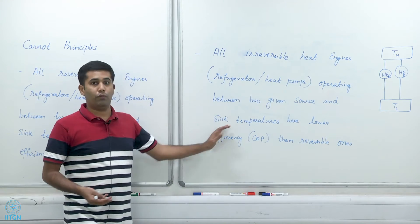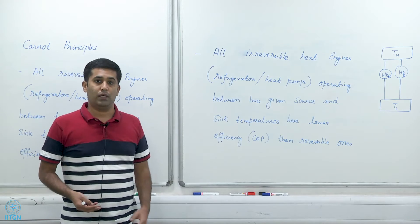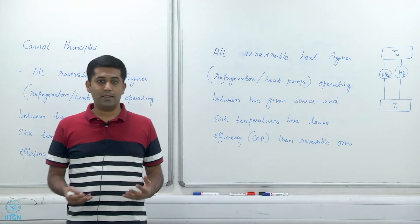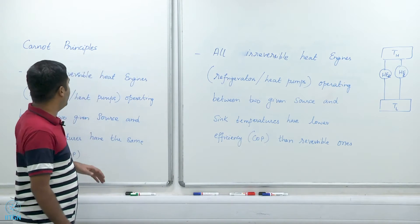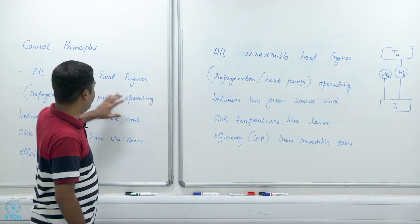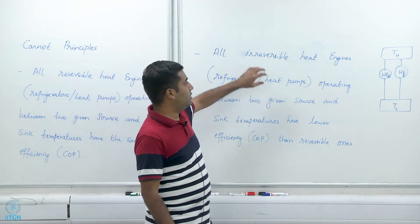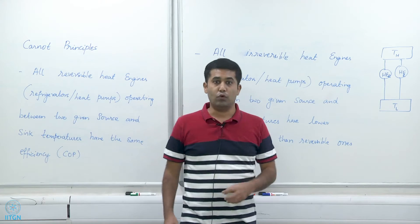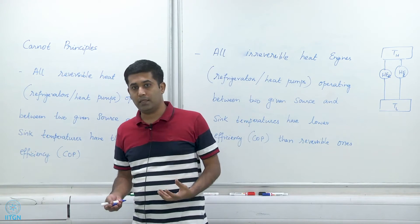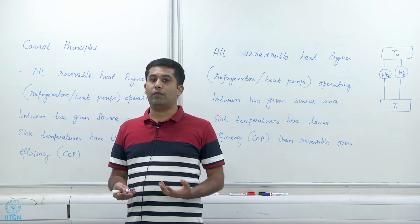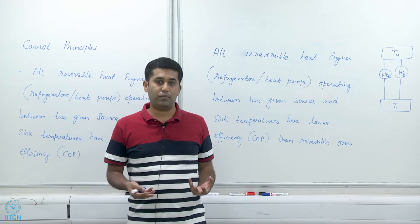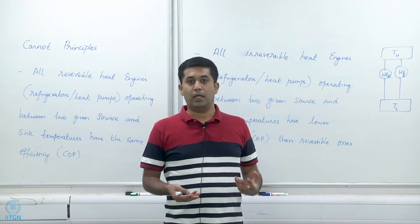These together form the Carnot principles. It is easy to show that if we violate this — for example, if we have an irreversible heat engine that is more efficient than a reversible heat engine — then we can show that we either violate the Kelvin-Planck statement or the Clausius statement.